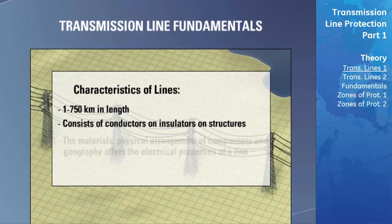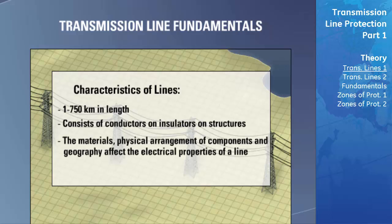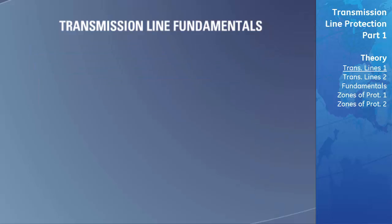The material that is used in the structure, the physical arrangement of the components used, and the geography that the conductors and towers are located in greatly affects the electrical properties of the line. All of these factors must be considered when determining the best method of protecting the transmission line.